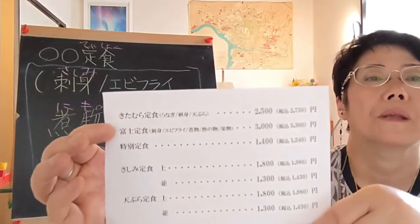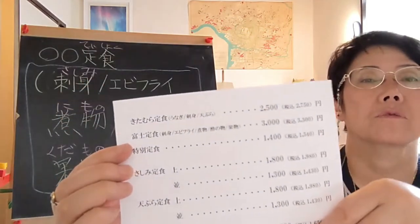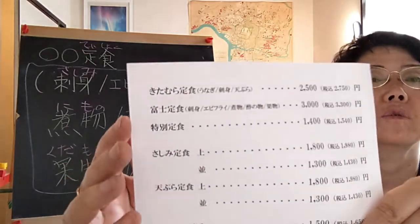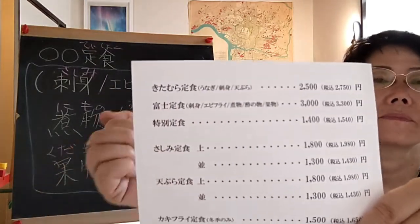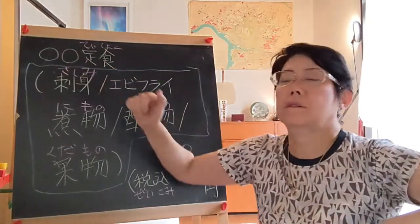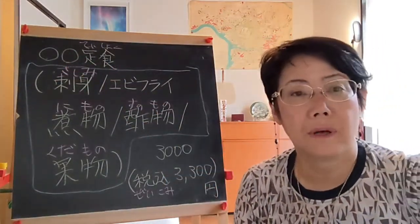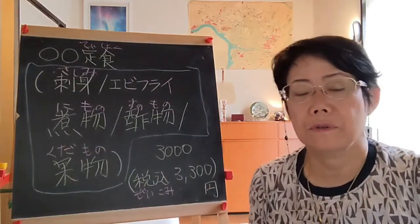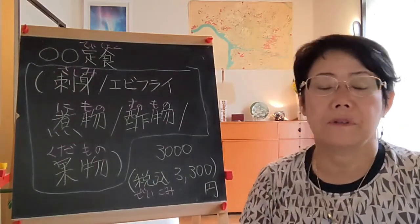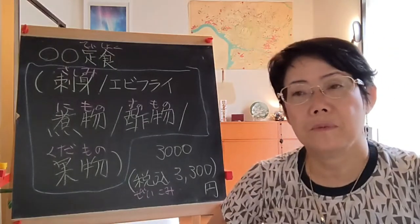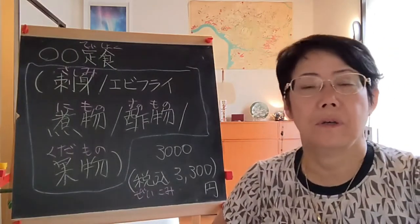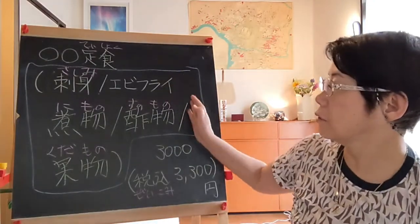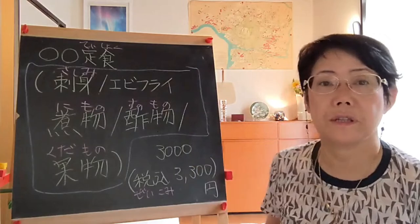Let's look at the teishoku. The most expensive teishoku is the Fuji teishoku — 富士定食. We have Mount Fuji near here, so the restaurant named their most expensive set menu after it. Here are the contents of the Fuji teishoku.